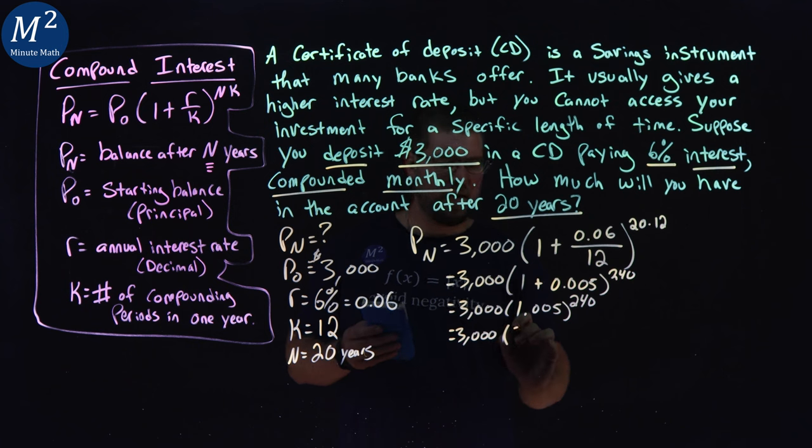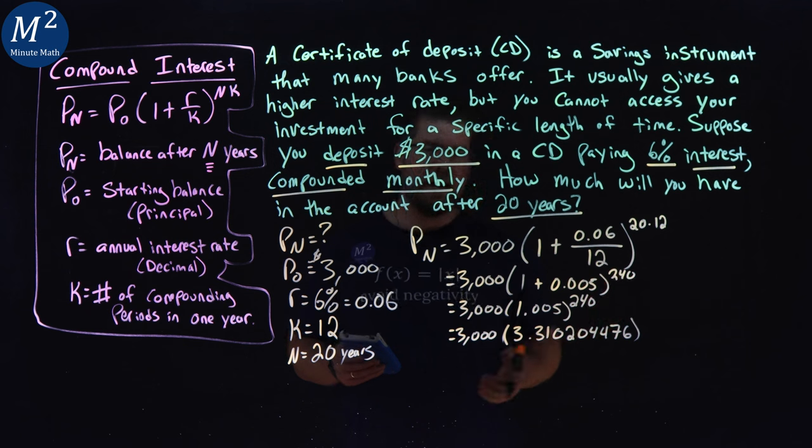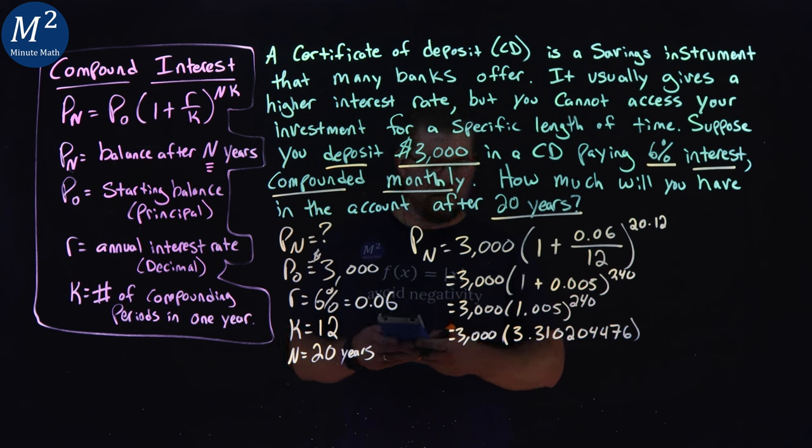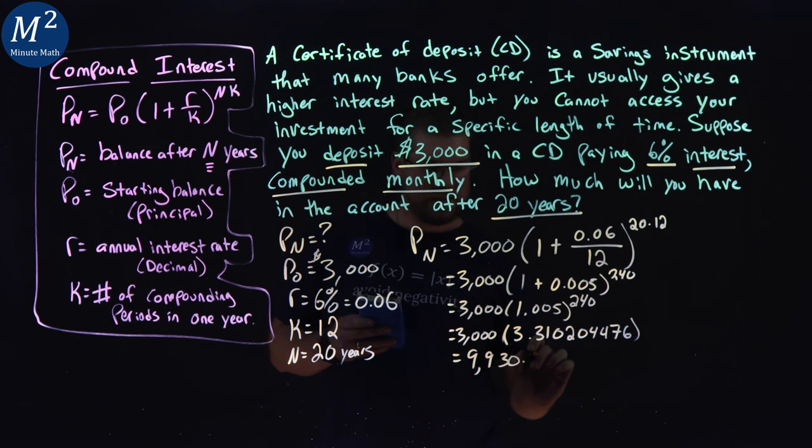So, what I'm going to do here is 3.310204476. I'm just going to use the whole value in the calculator. Make sure you get a more accurate answer here. And you multiply that by 3,000. And we get 9,930.613427.